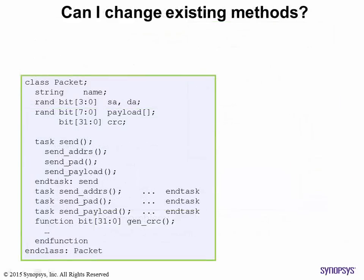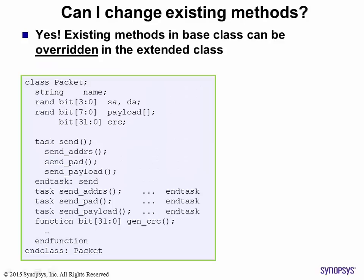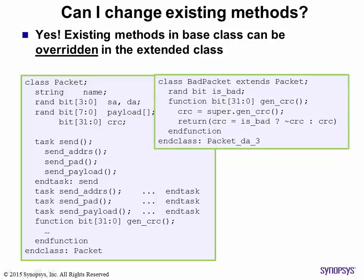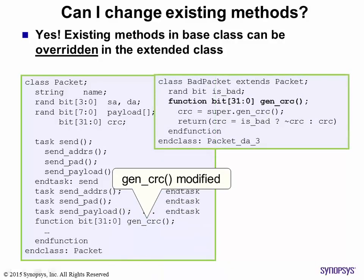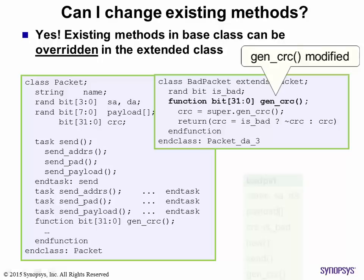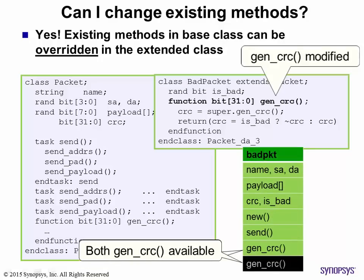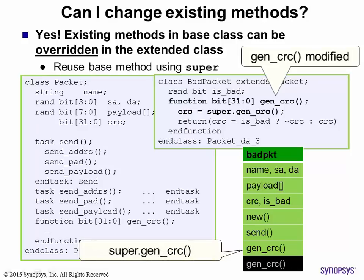The question that arises is: can you change existing base class methods? You may want to inject errors or delays, or coding a new algorithm may make the simulation faster. And yes, changing existing base class methods is allowed in the extended class — this is also known as overriding. In this extended class, the function GenCRC has been modified. Notice that in an instance of the BadPacket class, both the GenCRC methods are available. It is likely that you may want to reuse the existing GenCRC method. This is done by using the keyword super to access the method of the base class from the extended class, if you wish to use it.